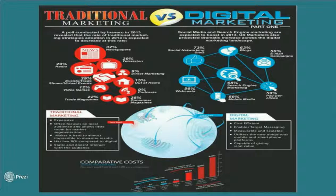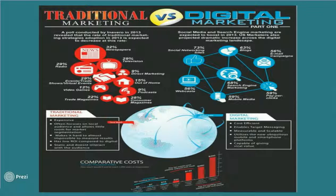Traditional marketing saw a decrease in the use of newspaper, television, and radio. It reaches only local people, is expensive, difficult to measure, has low return on investment, and it is difficult to interact with the audience. Digital marketing reaches globally, is cost efficient, measurable — you can check how many people are using it and from which countries — and it works on PCs, laptops, mobiles, and smartphones.